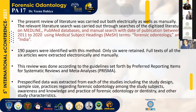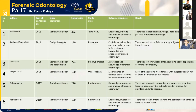A total of 190 papers were identified with this method and only six were retained with full text. The review was done according to PRISMA guidelines, and pre-specified data was extracted from each study including study design, sample size, and practice regarding forensic odontology among dentists.